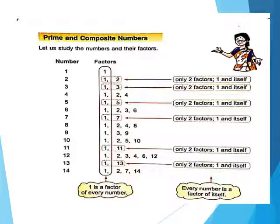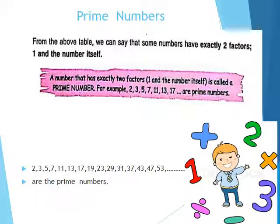Now, what is a composite number? A number that has more than 2 factors is called a composite number. From our table, we can see that some numbers have exactly 2 factors — 1 and the number itself — and those are prime numbers: 2, 3, 5, 7, 11, 13. You can extend this list: 17, 19, 23, 29, 31, 37, 43, 47, 53 and so on are also prime numbers.